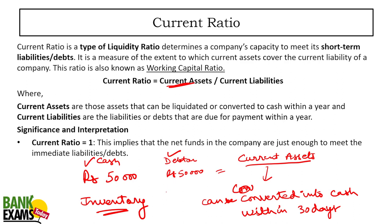Any prepaid expenses — for example, if you have prepaid your electricity bill — those are also your current assets. All these are current assets. And what are current liabilities? All the liabilities that are due within the next 30 days — any installment, any amount you owe to a supplier or creditor — those are current liabilities.